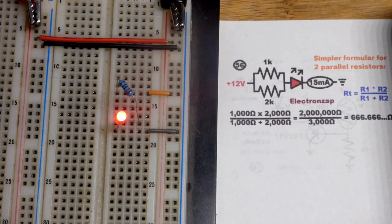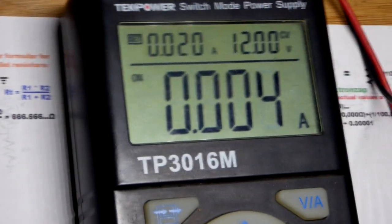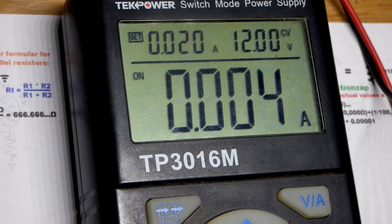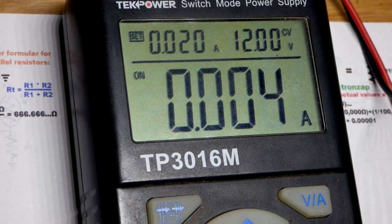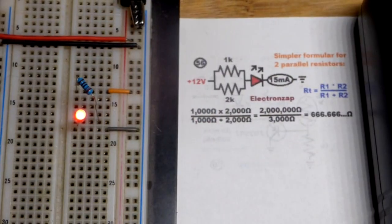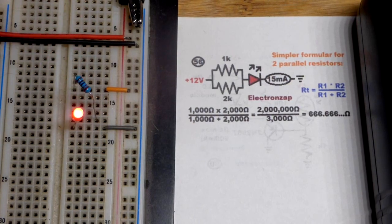But yeah, there you can definitely see the difference. And I will zoom over here. There you can see, it's about 4 milliamps of current approximately with a 2,200 ohm resistor.